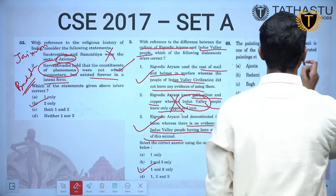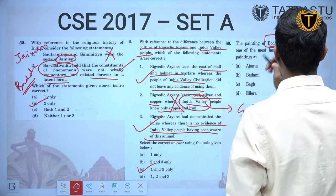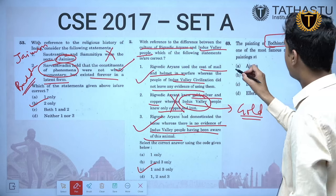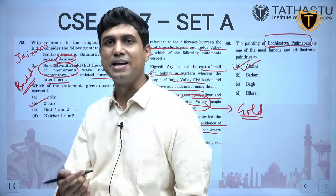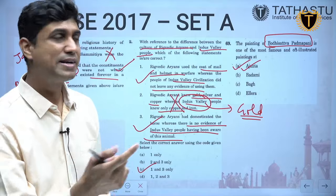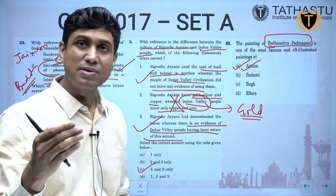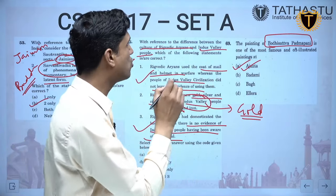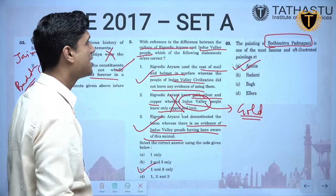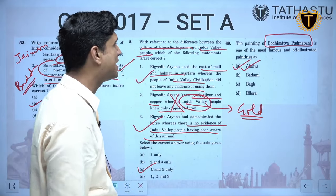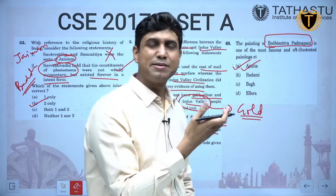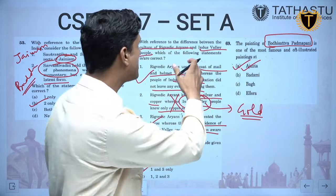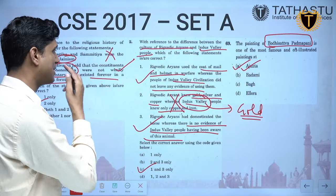The painting of Bodhisattva Padampani is one of the most famous illustrated paintings at Ajanta — and Ajanta is coming again. In 8 years Ajanta has appeared 3 to 4 times. UPSC keeps on asking some themes repeatedly, so you have to go into depth about those themes. The Bodhisattva Padampani painting is given in the Class 11 Indian Art NCERT with a large picture.